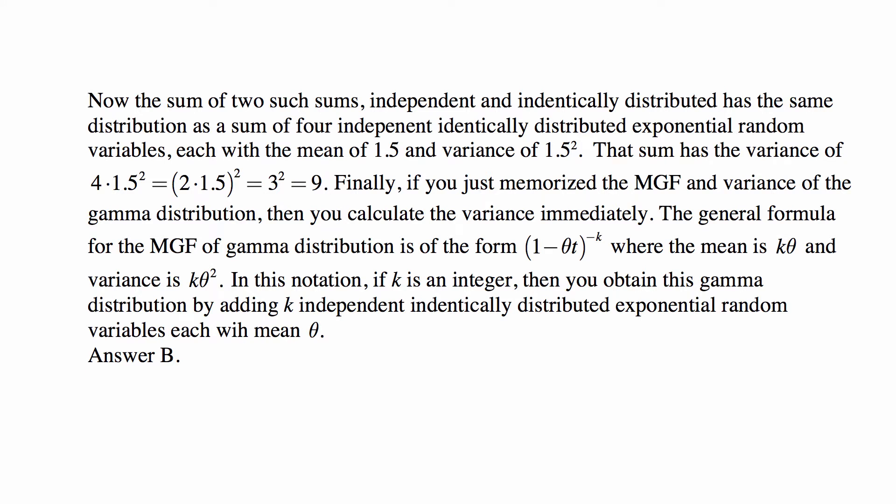Now the sum of two such sums, independent and identically distributed, has the same distribution as the sum of four independent identically distributed exponential random variables, each with the mean of 1.5 and variance of 1.5^2. That sum has the variance of 4*1.5^2, which is the same, well, four is 2^2, so this is the same as (2*1.5)^2, which is 3^2 or 9. And that would give us the same answer, of course, because the variance is 9, the standard deviation is 3.